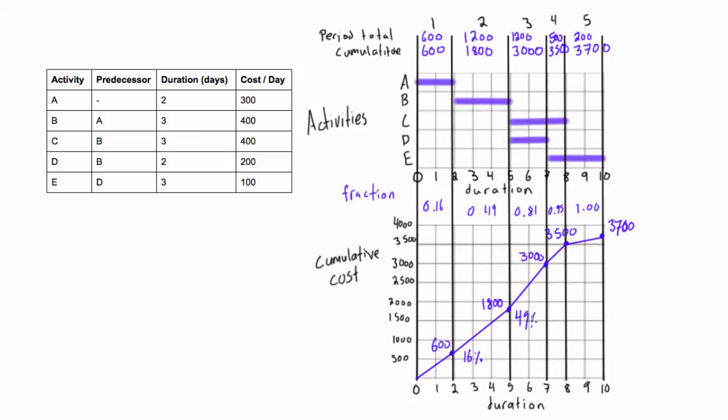Here, this would be 49%. You've already spent, by this point, you've already spent 49% of the total project cost. Here, this would be 81%. This guy would be 95%.